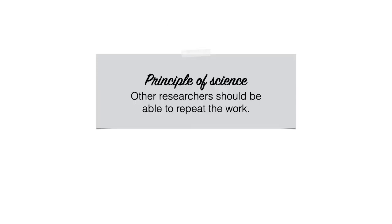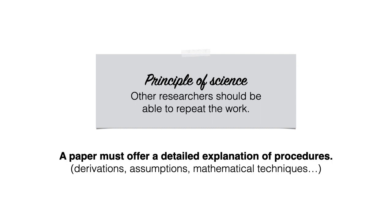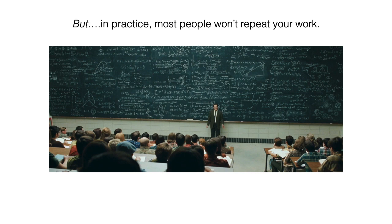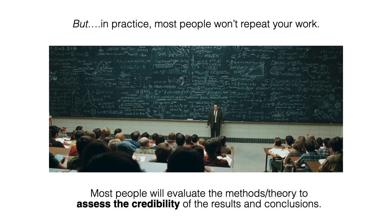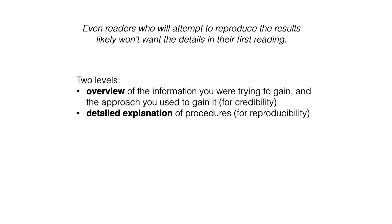Another thing to be aware of is that ideally, other researchers should be able to repeat the work that we're presenting. A paper must offer detailed explanations of procedures, such as the derivations, assumptions, and mathematical techniques. But in practice, most people won't repeat your work. Most people will evaluate the methods and theory to assess the credibility of the results and conclusions. And even readers who will attempt to reproduce the results likely won't want the details in their first reading. So what you should be aiming for is to describe your methods or theory at two different levels. The first is the overview of information you are trying to gain, and the approach you used to gain it. This is for credibility. And the second is to give a detailed explanation of the procedures. That's for reproducibility.